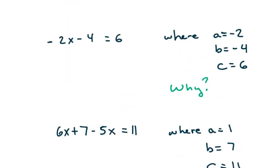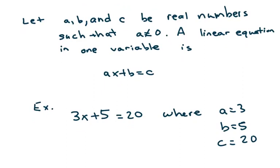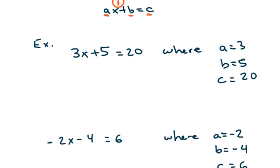Next: the definition of a linear equation in one variable. You want to know this because your homework will ask you whether something is a linear equation or not. A linear equation is in the format Ax plus B equals C, where A, B, and C are real numbers such that A doesn't equal zero. The key thing to realize is that x is raised to the first power. For example, 3x plus 5 equals 20 fits the format with A equal to 3, B equal to 5, and C equal to 20.